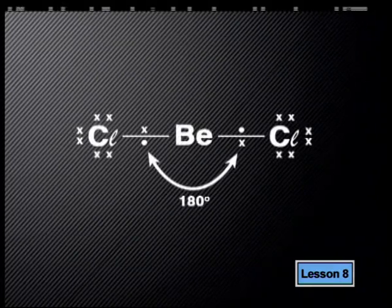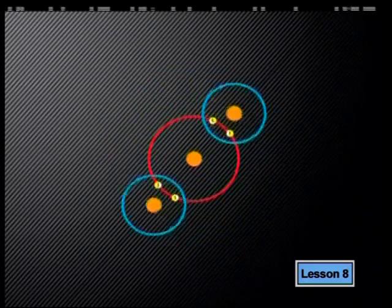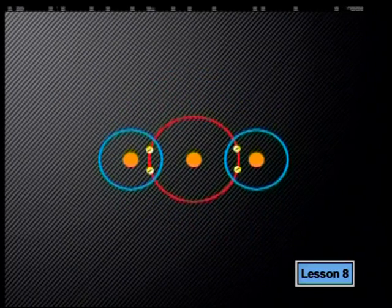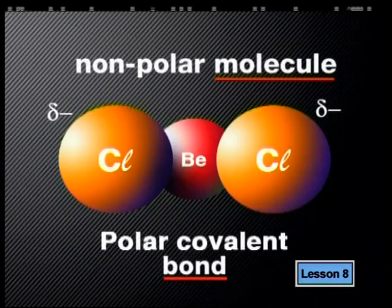We call this arrangement linear. The angle between the nuclei of the chlorine and beryllium atoms is 180 degrees. Using x-rays, chemists can accurately measure the angle between the nuclei and confirm that the VSEPR prediction is correct. A linear arrangement applies whenever a molecule has only two electron pairs in the valence shell of the central atom — in all such cases the molecule will have a linear shape. Even though the beryllium-chlorine bond is polar covalent, the molecule does not have two oppositely charged ends, so it is called a non-polar molecule.